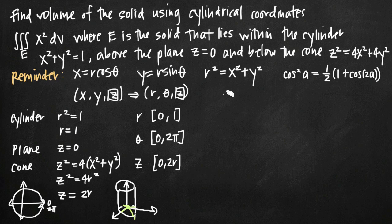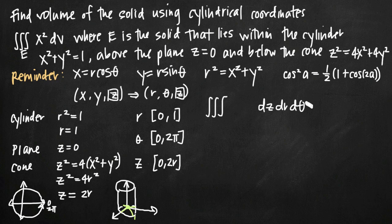When dealing with cylindrical coordinates, our standard order of integration is dz, then dr, then d theta — because theta's limits are always constant at 0 to 2pi, and z's limits usually involve another variable. So we set up the triple integral as the integral from 0 to 2pi, the integral from 0 to 1, the integral from 0 to 2r, with the order dz dr d theta.